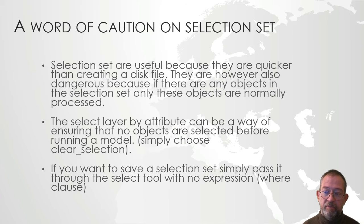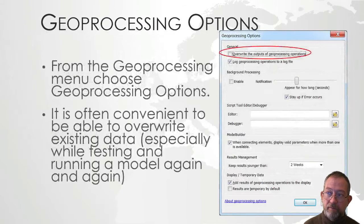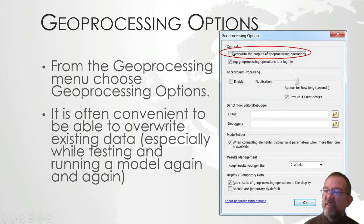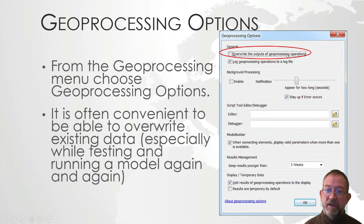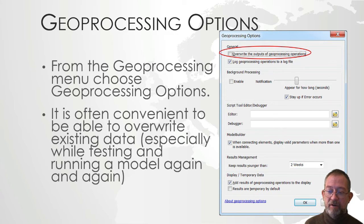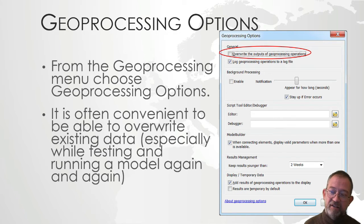This is primarily relevant when we start doing Model Builder later. One other thing to consider is going into the Geoprocessing Options. There at the top there is one called 'Overwrite outputs of geoprocessing operations.' Typically when we are doing geoprocessing we are in a trial-and-error mode, and therefore we often want to overwrite our outputs instead of having to name files sequentially. We can just keep the same name and it will overwrite automatically.